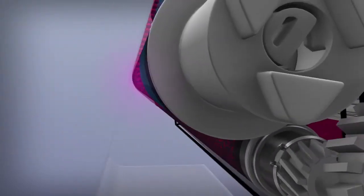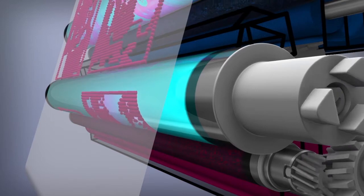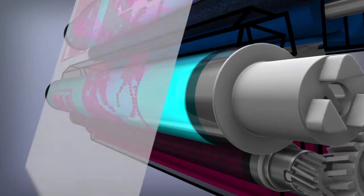The toner on the OPC drum is then transferred to the paper. This process occurs within the four color cartridges in every laser printer.